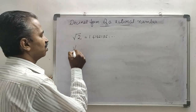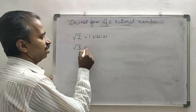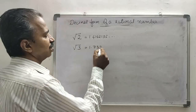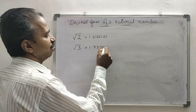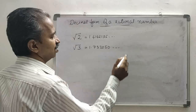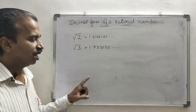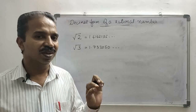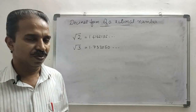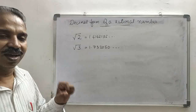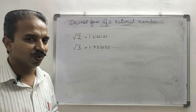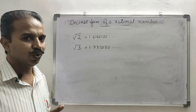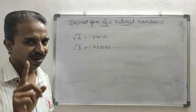Square root of 3, when you find it out, is 1.732050..., which is also non-terminating and non-recurring — so that is also an irrational number. So root 1 is rational, but root 2 and root 3 are irrational.